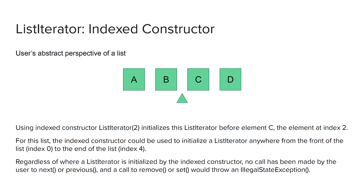In this slide, we'll visualize the results of calling the ListIterator's indexed constructor. We've called the ListIterator constructor with index 2, so the iterator, represented by a triangle, is positioned in front of the element at index position 2, the letter C. Index 0 would be in front of A, index 1 in front of B, so index 2 is in front of C. From this position, since next or previous has never been called, a call to remove or set would throw an IllegalStateException, but a call to add would be allowed. A call to next would return C, and a call to previous would return B.